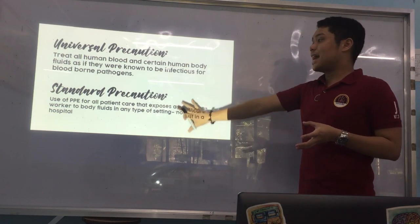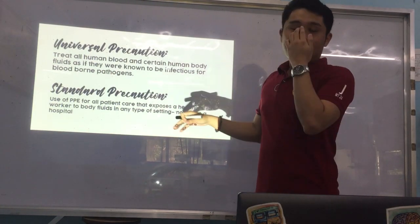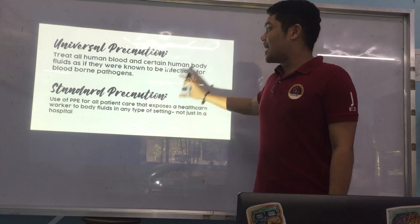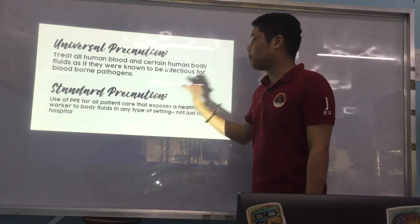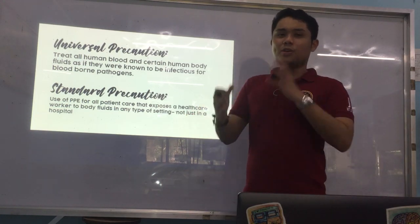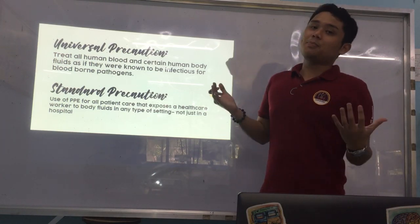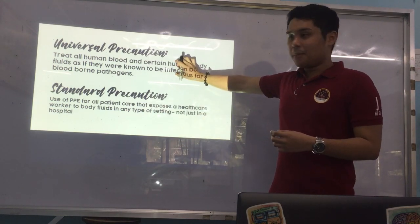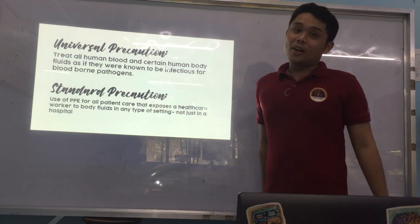What is the difference between universal precautions and standard precautions? For universal precautions, as you may have noticed, it's not stipulated that you should wear PPE. For standard precautions, it adapts that same statement but now including PPE — you should use PPE for all patient care that exposes a healthcare worker to body fluids in any type of setting. What laboratories follow is usually the standard precautions.